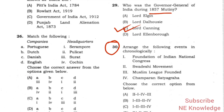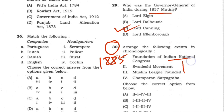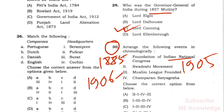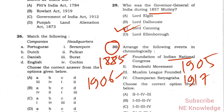Question 30: Chronological order of historical events. Foundation of Indian National Congress: 1885. Swadeshi Movement: 7 August 1905. Muslim League founded: 1906. The correct series order is C, number 2. The sequence 1, 2, 3, 4 is confirmed with INC 1885 as first.